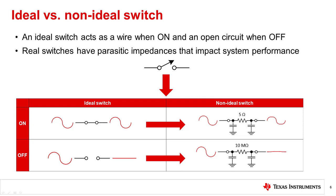Input and output can be used interchangeably here and is entirely dependent on which side is driving. A real switch will have a multitude of parasitics that impact system performance. In the on state there will be some resistance between the input and the output as well as capacitance. Combined these will both attenuate and distort the input signal to some degree. In the off state there will be some finite resistance between the input and output as well as capacitance, so the output will see small coupling from the input and won't be completely isolated.